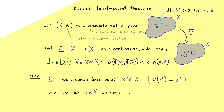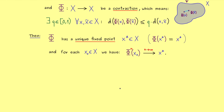Moreover, the theorem also tells us how to find this fixed point. It gives a construction procedure: for any starting point x₀, put it into the map φ to get another point in X, then put that into φ again. Repeating this n times gives a whole sequence in X, and the claim is that this sequence converges to the fixed point x* no matter which starting point x₀ we choose. For the proof we fix x₀ and define the sequence xₙ, where x₁ means applying φ once, x₂ means applying it twice, and so on.